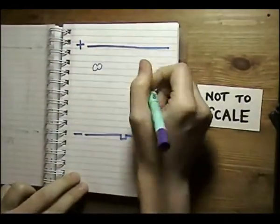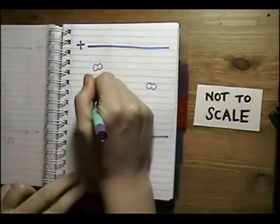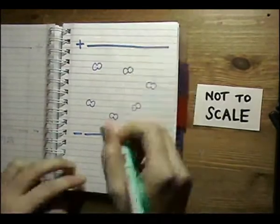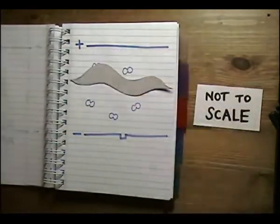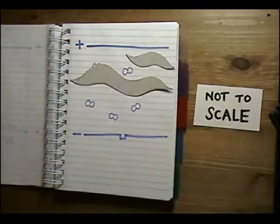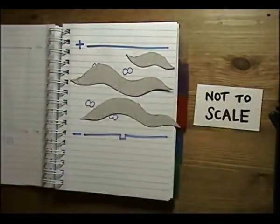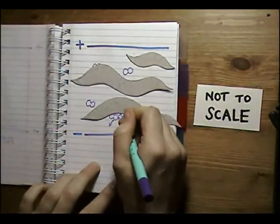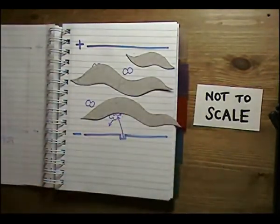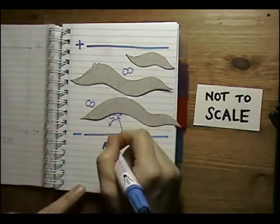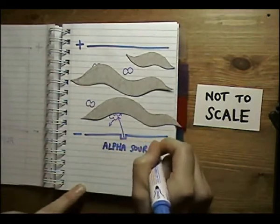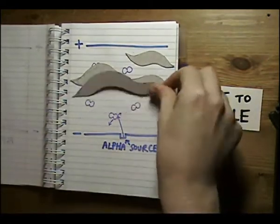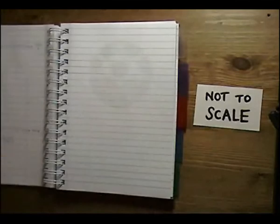But if any smoke gets near the alarm, it drifts into the chamber and fills the space between the plates. This blocks the flow of electrons to the top plate, and that reduces the electric current in the circuit. The alarm detects this drop, and because less current means smoke, sounds the alarm.